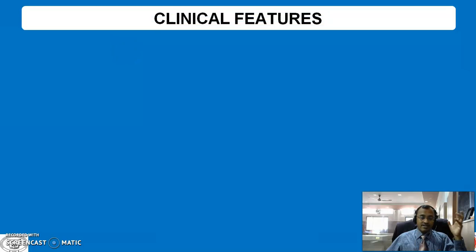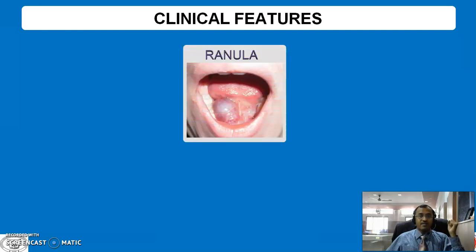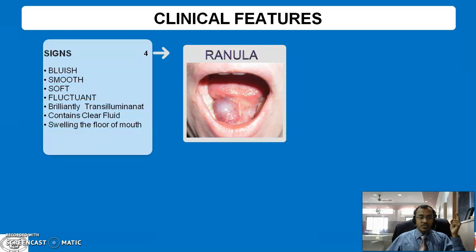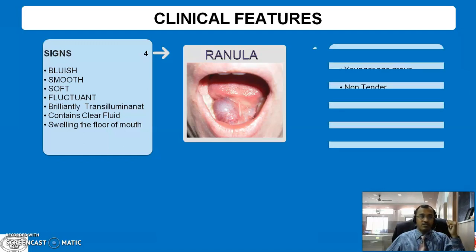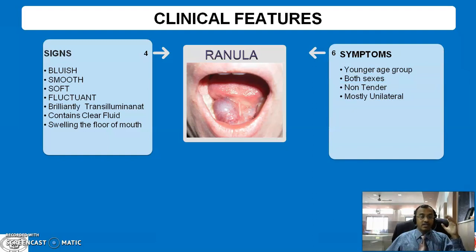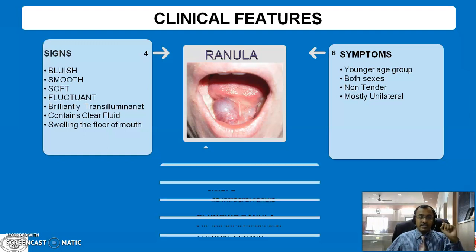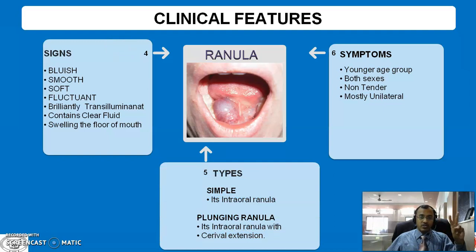One can understand this swelling on the basis of clinical features, signs and symptoms, but the signs play a key role. The signs of Ranula are: it is a bluish cystic swelling having a smooth consistency, soft in nature with a positive fluctuation test and brilliantly transilluminant, as it contains clear fluid. It is usually situated at the floor of the mouth, seen in younger age groups of either sex, absolutely non-tender in nature, and mostly unilateral.